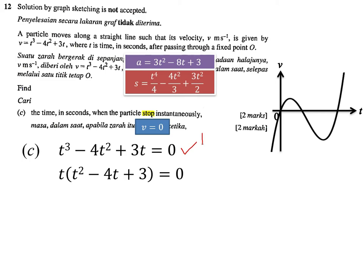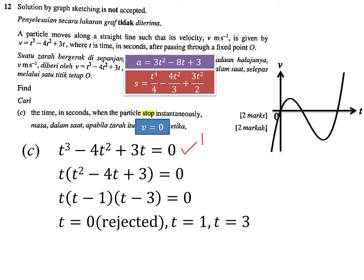Factorize by taking out t first, leaving t² - 4t + 3 inside the bracket. Then factorize again to get t(t - 1)(t - 3) = 0, giving three possible values: t = 0, t = 1, and t = 3. We reject t = 0 because that is the starting time when the particle is initially at rest. Therefore the particle stops instantaneously at t = 1 second and t = 3 seconds.